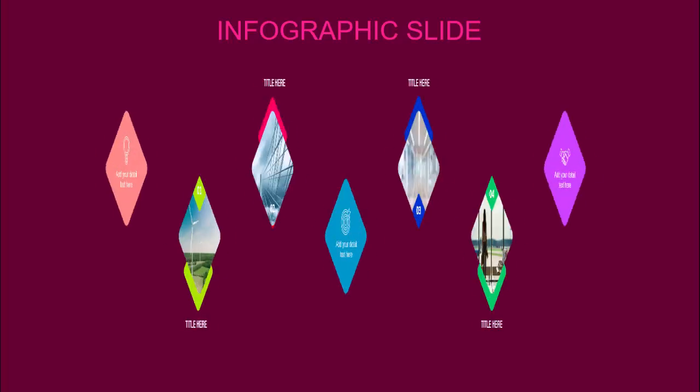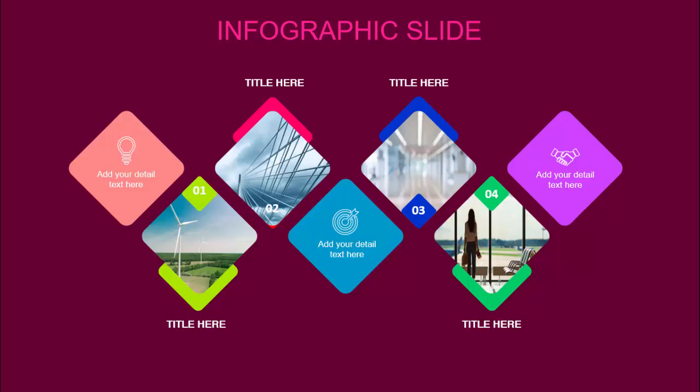In today's tutorial I'm going to show you how to create a four options infographic slide in PowerPoint. I have created multiple slides with dark and light themes. This is the dark theme — when you click, you can see the four options appear. I've added different background images, and you can put option numbers one, two, three, and four, and add a title and detailed text along with an icon.